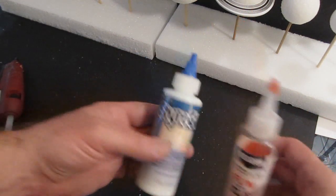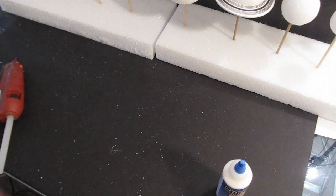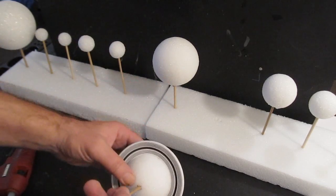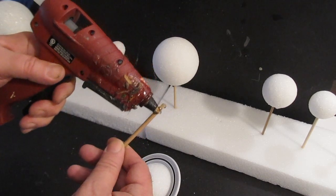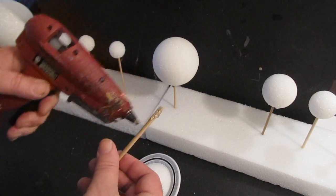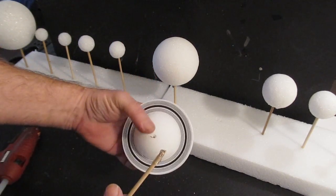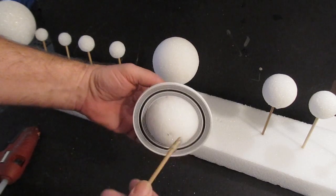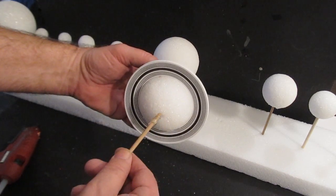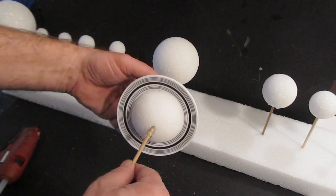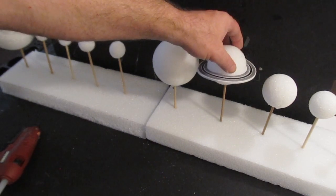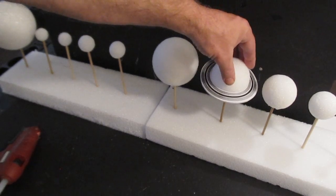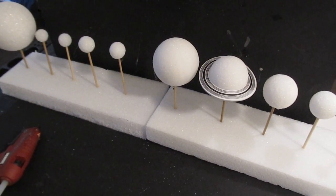You get the idea there. But look, see, there are different glues you can use almost anything. And I haven't glued the rings on Saturn. Don't do that now because we need to paint it.